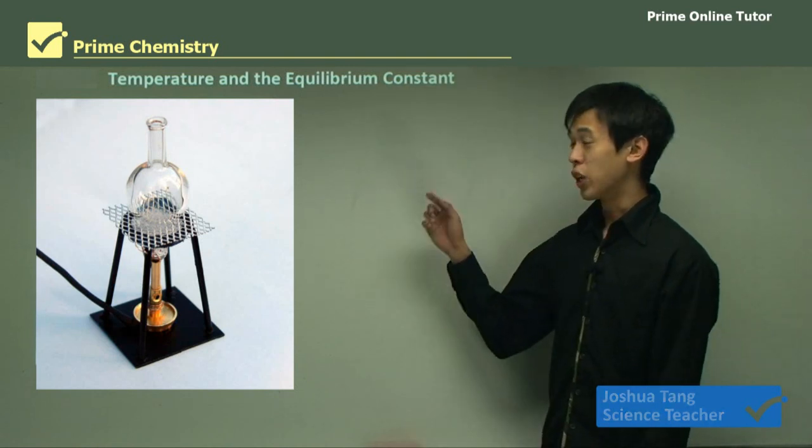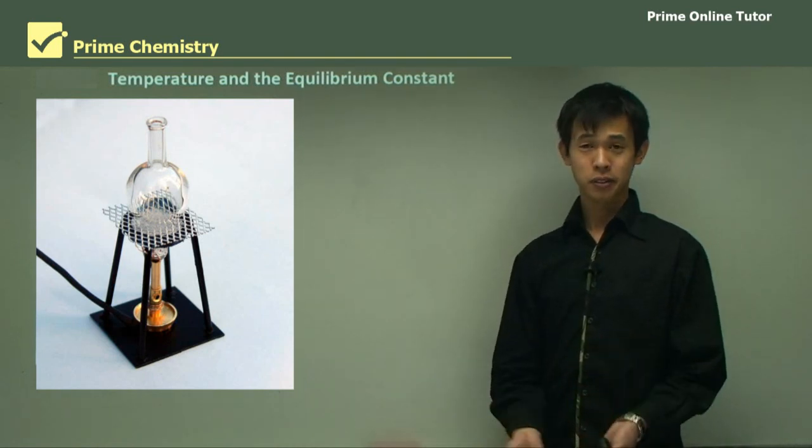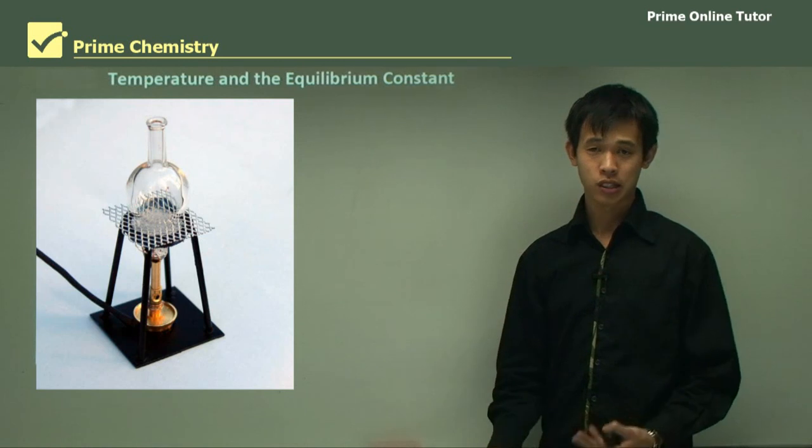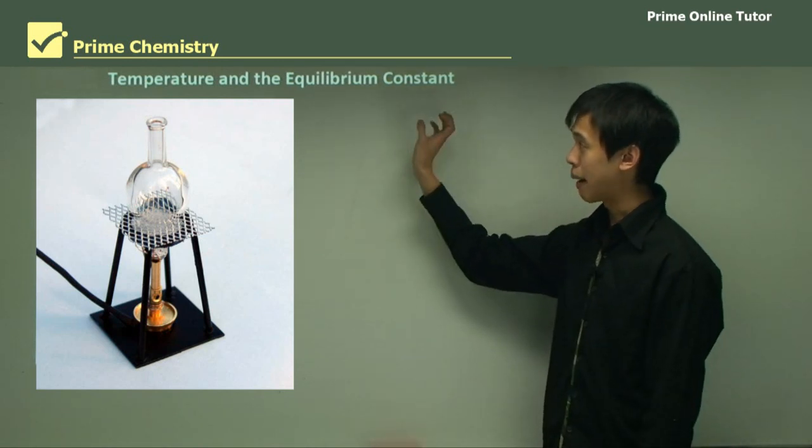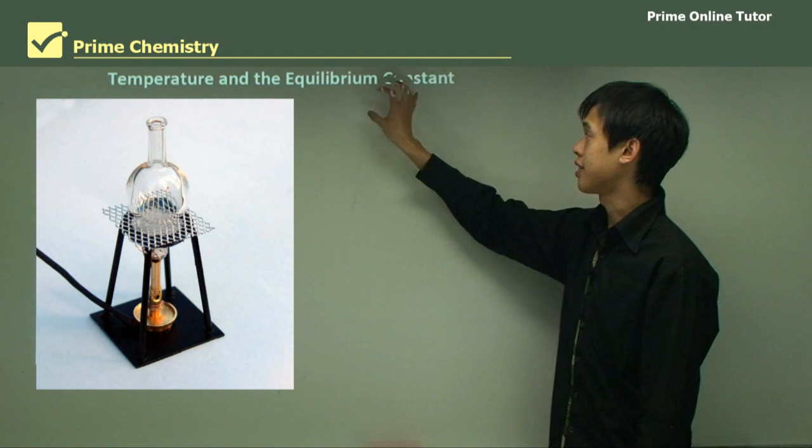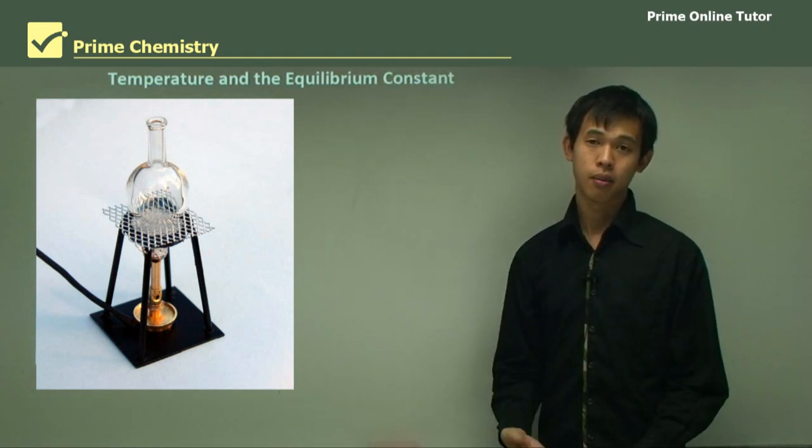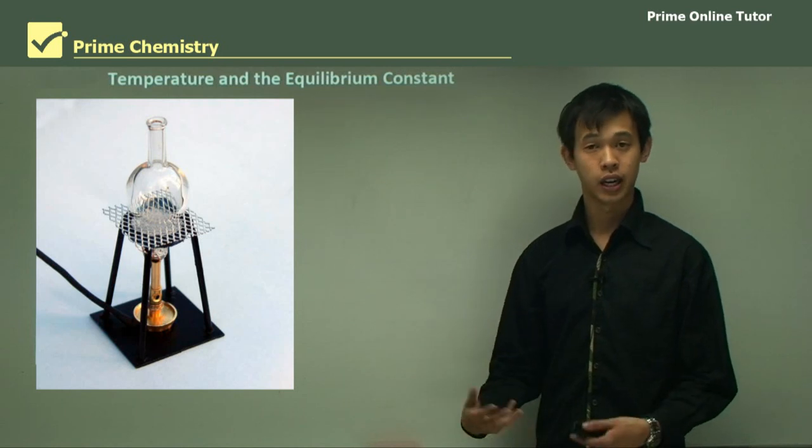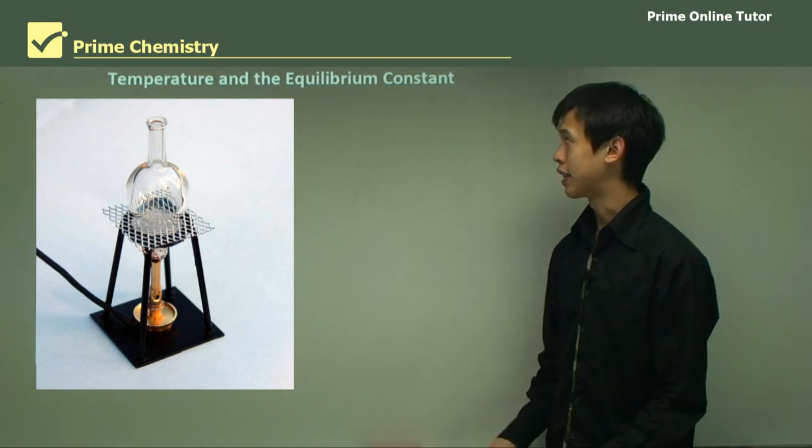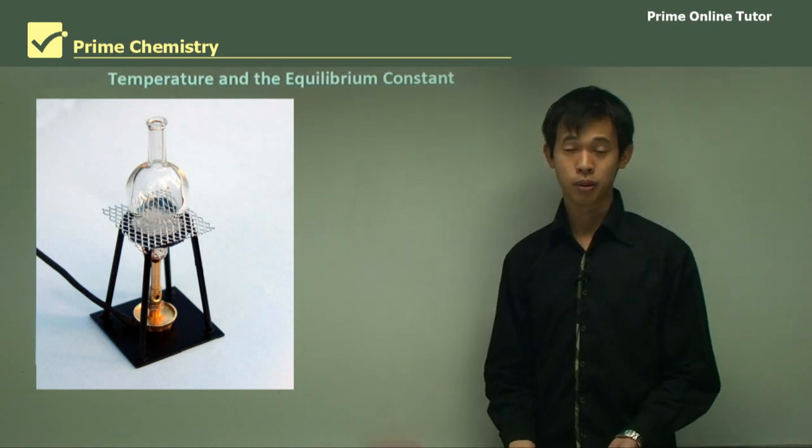In previous lessons we talked about chemical equilibrium and what the equilibrium constant was. So now we're going to talk about temperature in particular and how it affects the equilibrium constant, and do the other parts of equilibrium - pressure, volume and concentrations - affect the equilibrium constant as well.